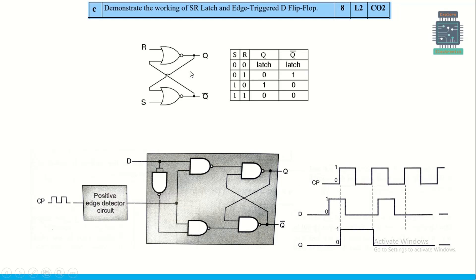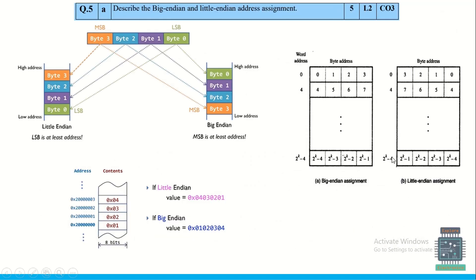To demonstrate the working of SR latch and its triggered D flip-flop: the SR latch circuit is given using NOR gates (or NAND gates). In the truth table, when S=0 and R=0, the output is in latch (hold) state. For the edge-triggered D flip-flop, a positive edge detector circuit precedes the flip-flop. The output changes only at the positive edge of the clock.